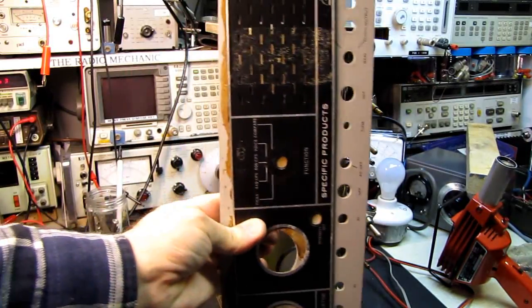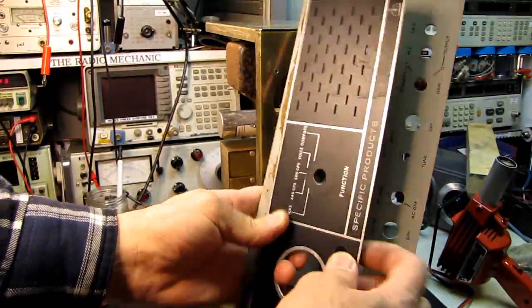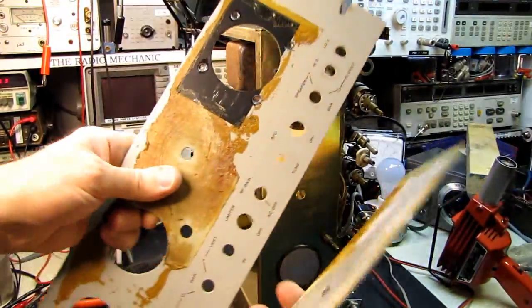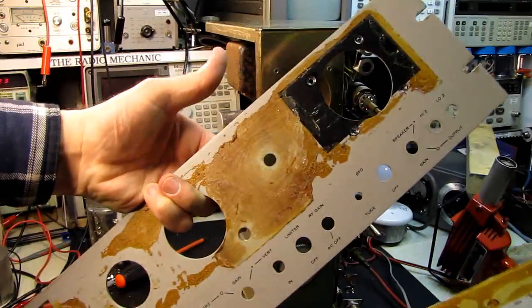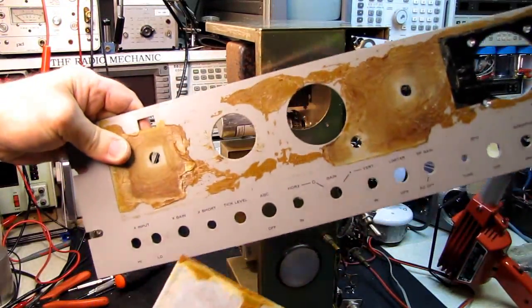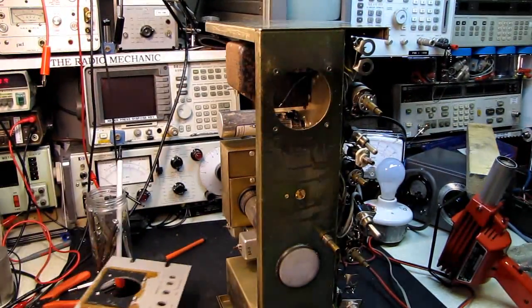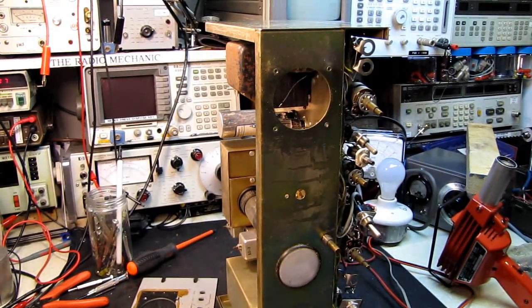However, to gain access to those screws, it's necessary to remove this top panel. This top panel is merely held on with rubber cement or contact cement, whatever you prefer to call it. I think the common name these days is contact cement.